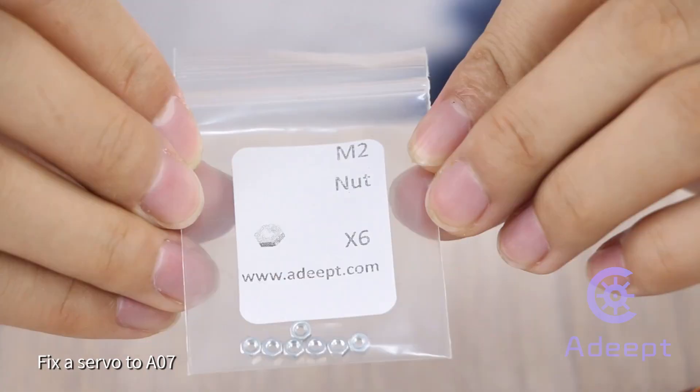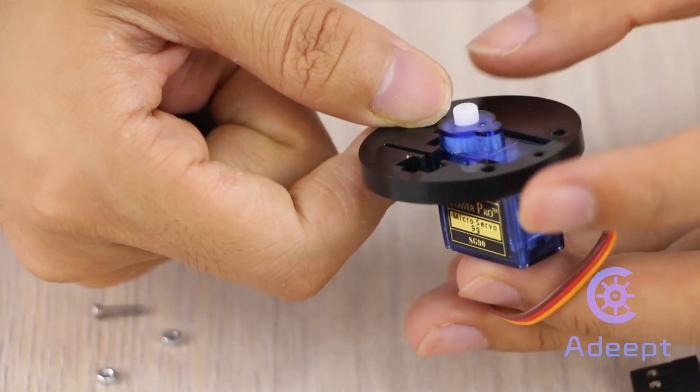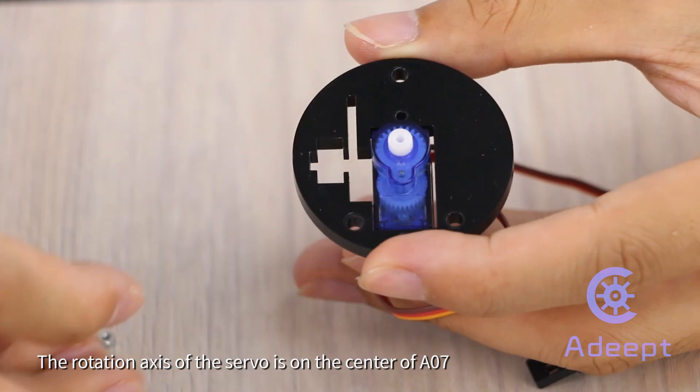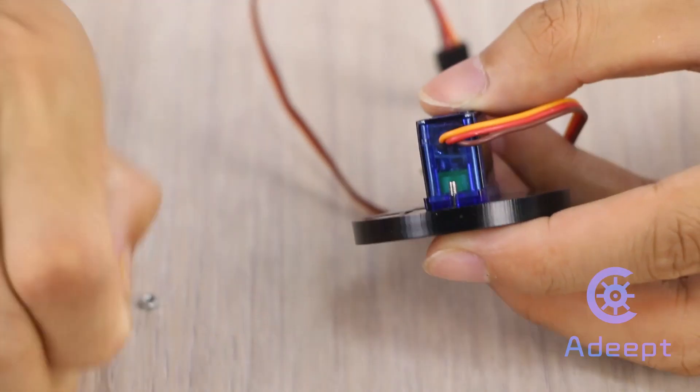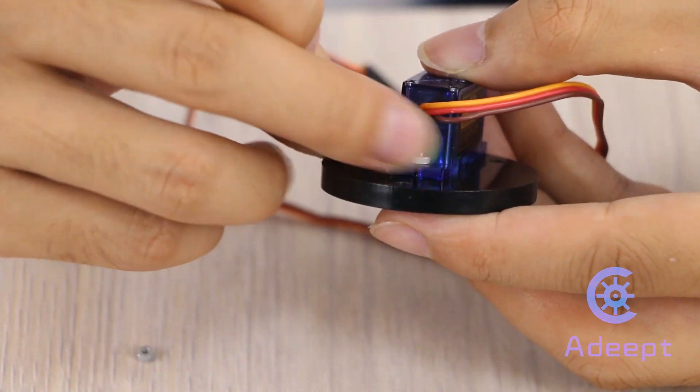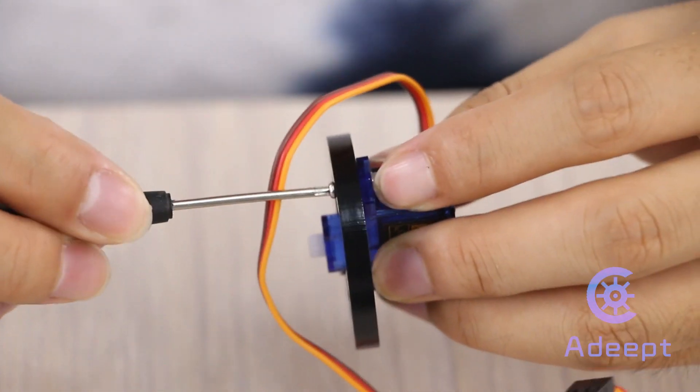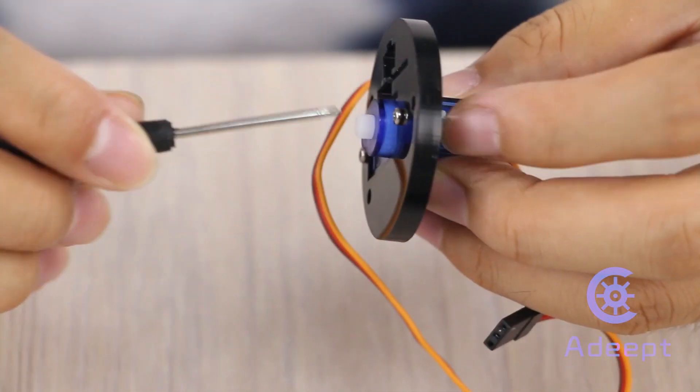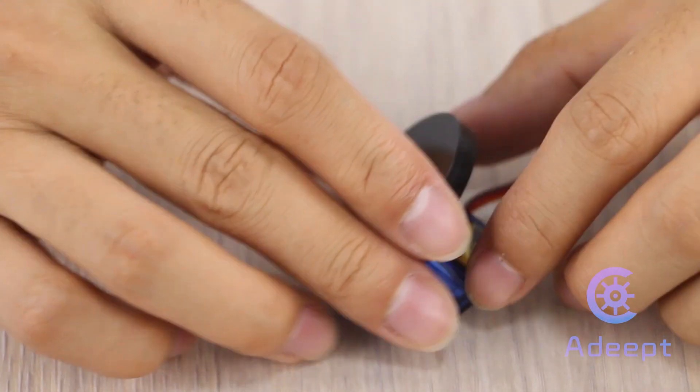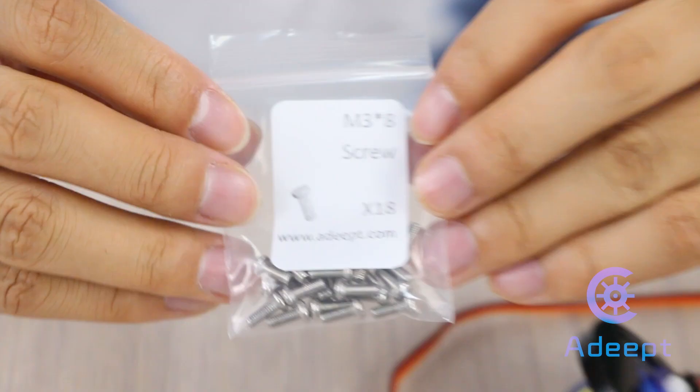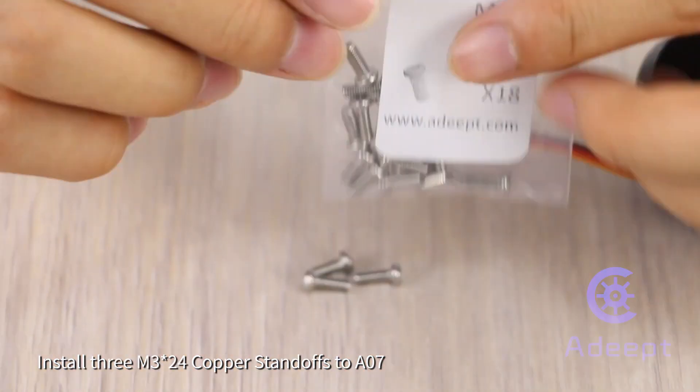Fix a servo to A07. The rotation axis of the servo is on the center of A07. Install three M3 multiple 24 copper standoffs to A07.